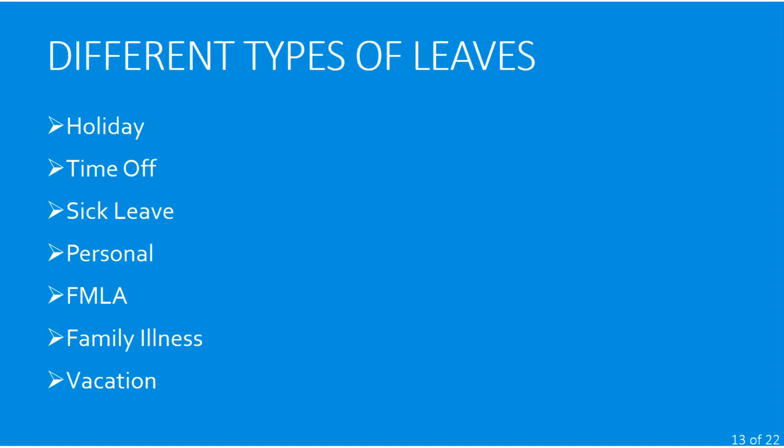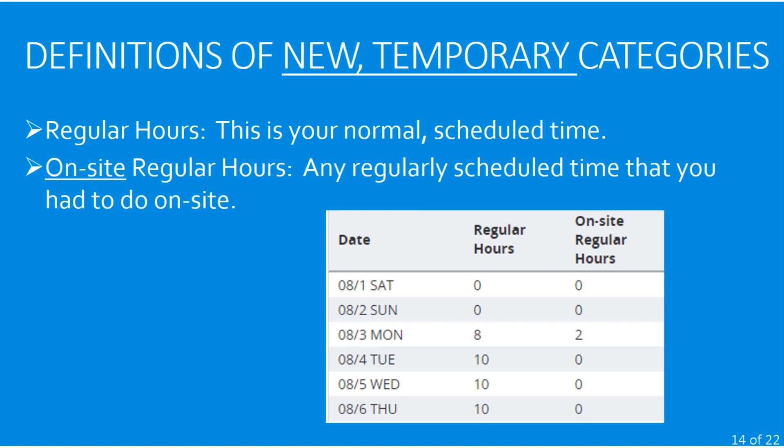Across the top of the timesheet are the different categories of time and leaves you would report — very similar to what we're used to seeing, and the usage of those has not changed. However, there are a few new temporary categories that have been added related to your regular hours and overtime hours because of our current pandemic situation. We have some MOUs that pay a slight premium if you have to come on site or do overtime on site. If those MOUs change or the pandemic resolves and the premium is eliminated, those two columns won't impact your time reporting.